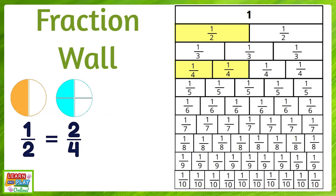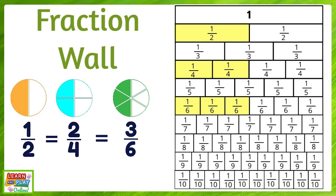Looking at the fraction wall, can you see the next fraction that is equivalent to one half or two quarters? If you said three sixths, you would be correct. There are another two equivalent fractions to these ones on the fraction wall — can you see what they are? The other two equivalent fractions are four eighths and five tenths. All of these fractions are equivalent fractions as they all show the same value.